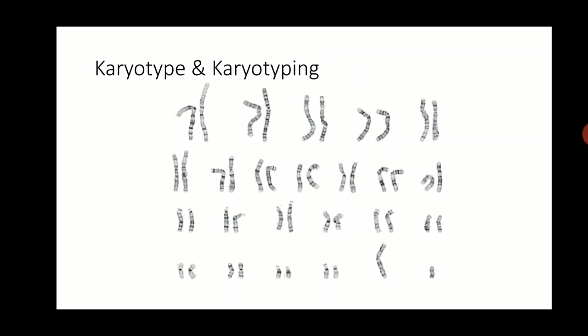A karyotype is a pictorial representation of all the chromosomes of a cell. The chromosomes are segregated, paired, numbered as 1, 2, 3, 4 and the X and Y chromosomes, and arranged in serial order, and a picture is taken. This represents the karyotype of a cell and the process is known as karyotyping. Chromosome number 1 is the largest and the centromere is present at the center.